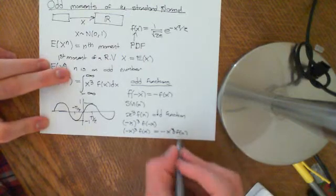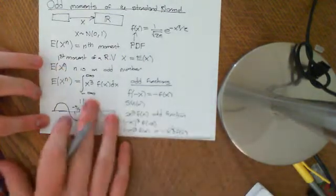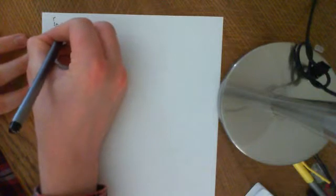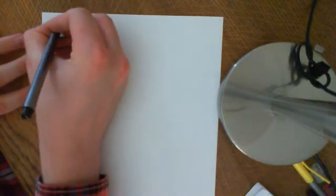And basically when you integrate odd functions, so when you integrate an odd function, so let's say f of x is an odd function between negative a and a dx, then it has to equal 0.